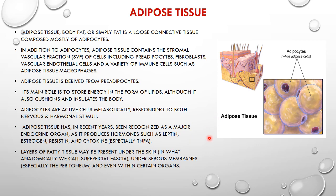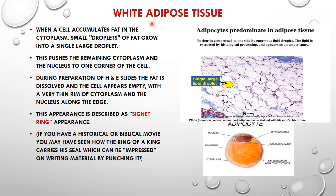A lot of research is ongoing on adipose tissue regarding adult-onset obesity and childhood obesity. The layers of fatty tissue may be present under the skin, which we call the superficial fascia, or under serous membranes especially in the peritoneum, or present as a cushion around certain important organs such as the kidney.